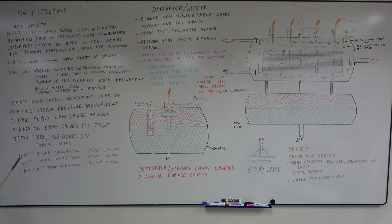Thermal cycles. 100 degree temperature variation on the deaerator, you can take a million cycles before you start having cracking. 200 degree temperature variation, 100,000 cycles before you start getting cracking. 400 to 500 degrees temperature variation, you can have 10,000 cycles before you start getting cracking.